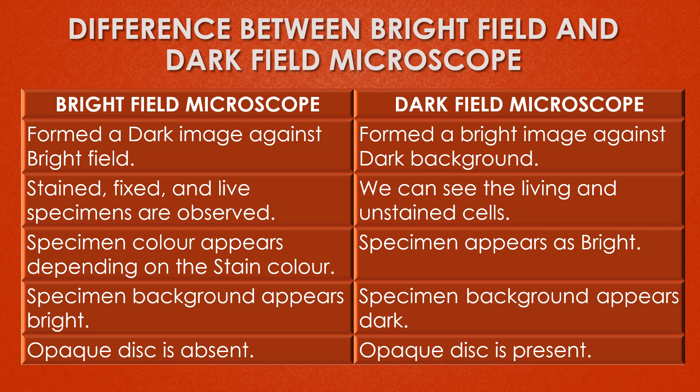In the bright field microscope, the specimen color appears depending on the various staining colors used. In the dark field microscope, the specimen appears bright and the background appears dark, while in the bright field microscope the specimen background appears bright. The opaque disc is absent in the bright field microscope but is present in the dark field microscope.